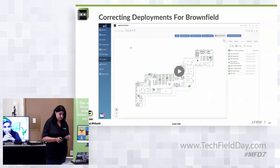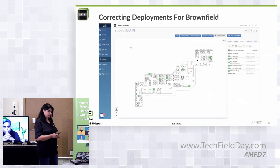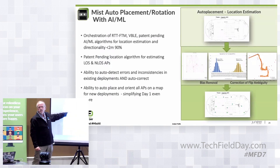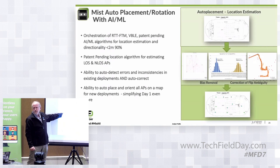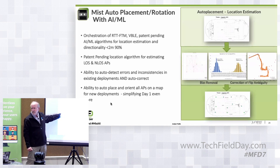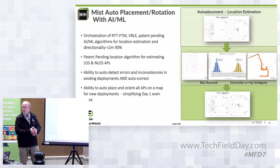The key takeaway is fine time measurement, and the two key algorithms: one is getting the APs placed correctly, and the other is dealing with non-line-of-sight. Fine time measurement works great line-of-sight, but the question is how do you handle non-line-of-sight? That's the problem we can solve.